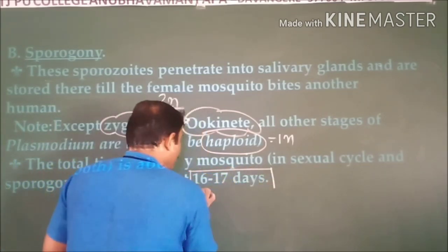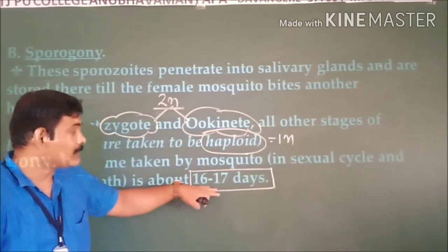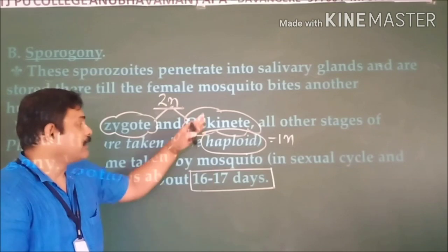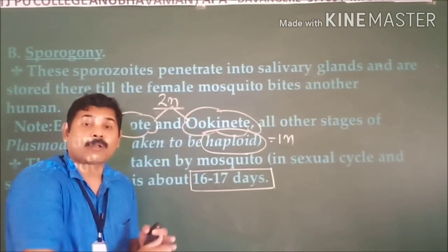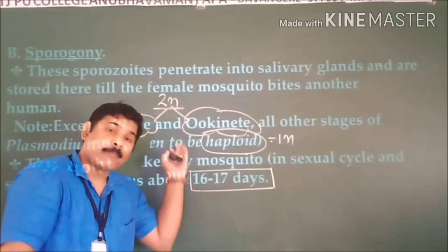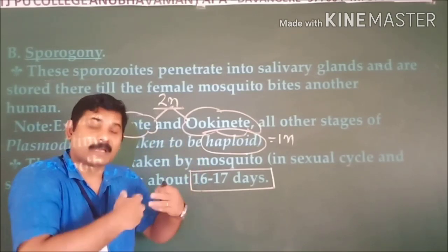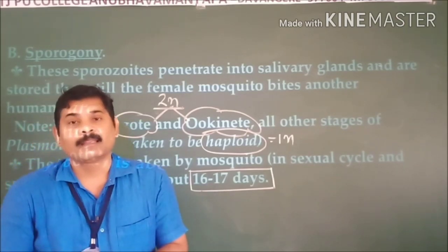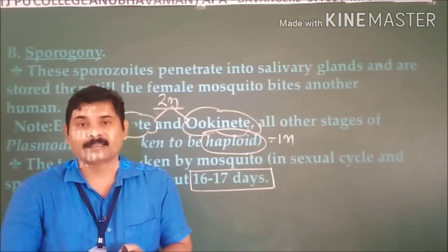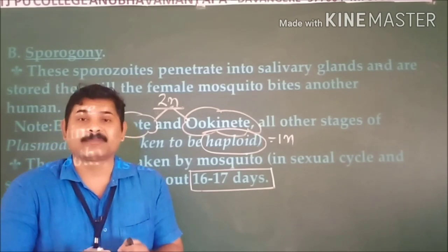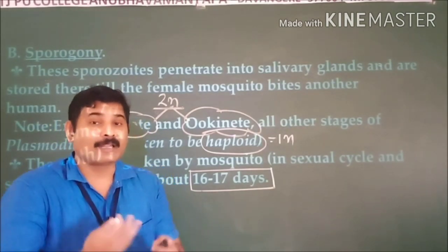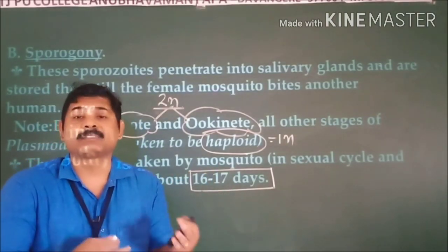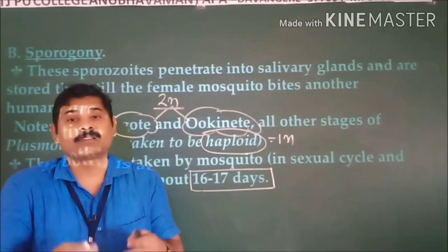To complete the total cycle of Plasmodium in the mosquito takes approximately 16 to 17 days. This concludes the life cycle of Plasmodium in both humans (covered in previous sessions) and in the mosquito. In the coming session, we will study the total incubation period of the parasite, the time required for the erythrocytic cycle, stages involved, and the prevention and control measures.